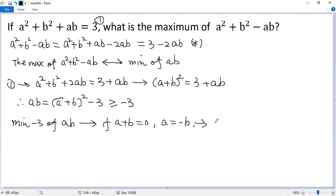Plug into the given condition, so we get a squared, which is negative b squared, plus b squared, plus a times b, which is negative b times b, equals 3. Simplify the left side, which is b squared equals 3.